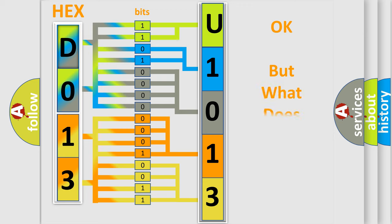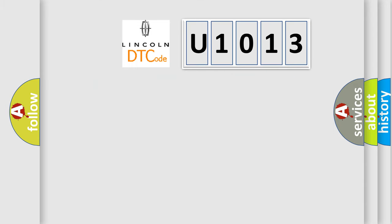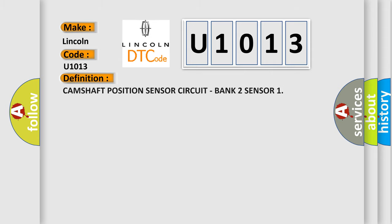We now know how the diagnostic tool translates received information into a more comprehensible format. The number itself does not make sense to us if we cannot assign meaning to what it actually expresses. So, what does the Diagnostic Trouble Code U1013 interpret specifically for Lincoln car manufacturers? The basic definition is: Camshaft Position Sensor Circuit, Bank 2 Sensor.